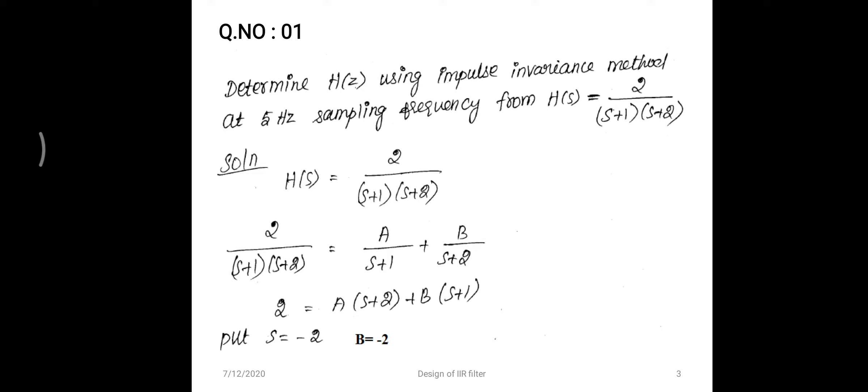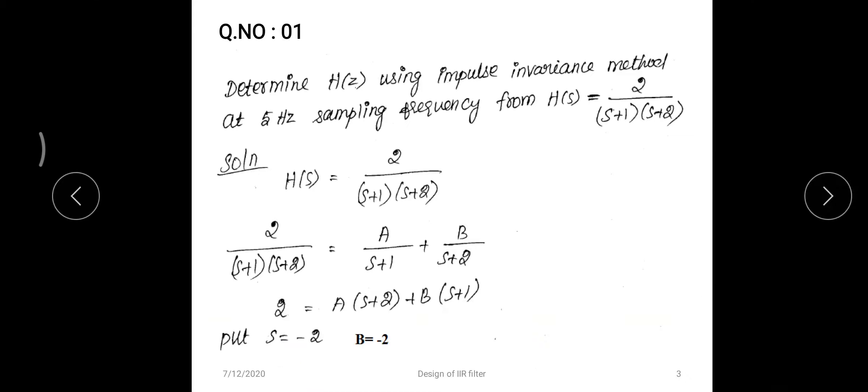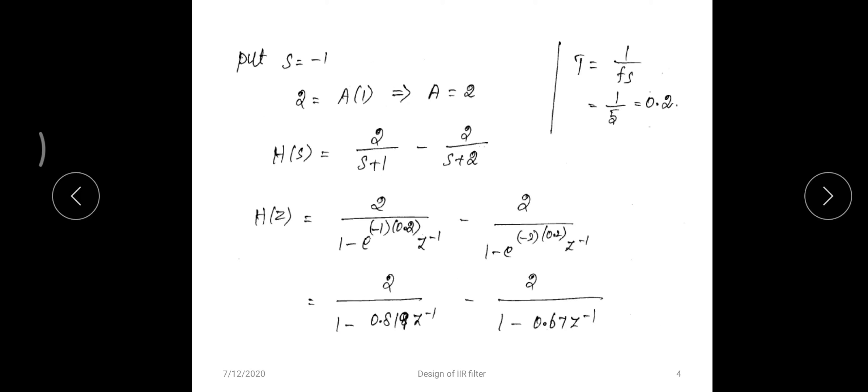Take H(s) = 2 / ((s+1)(s+2)) and perform partial fraction decomposition, separating it as A/(s+1) + B/(s+2). Solving for the coefficients, we get B = -2 and A = +2.